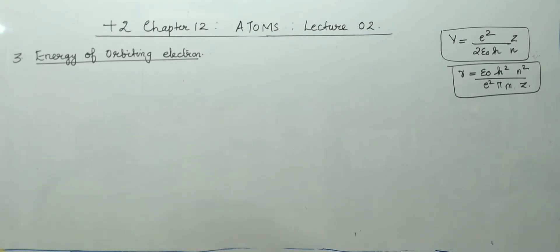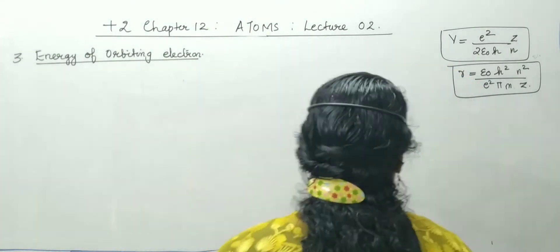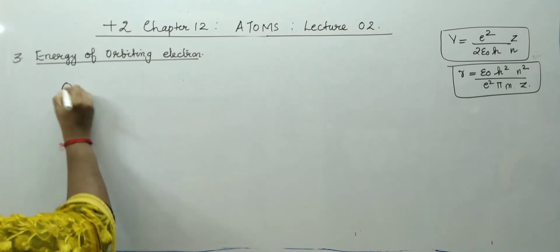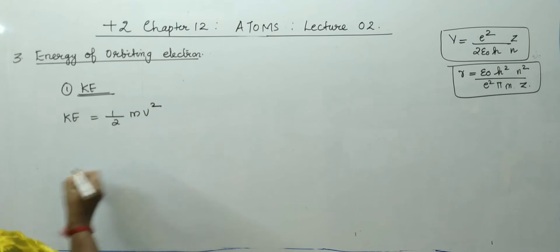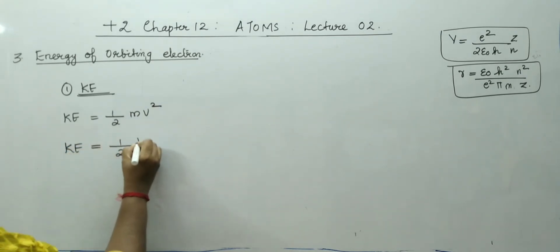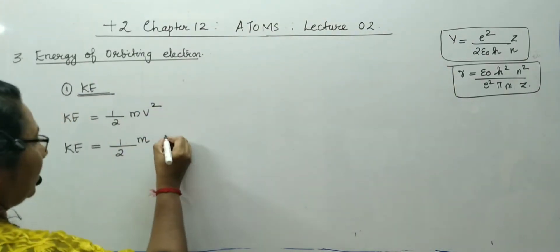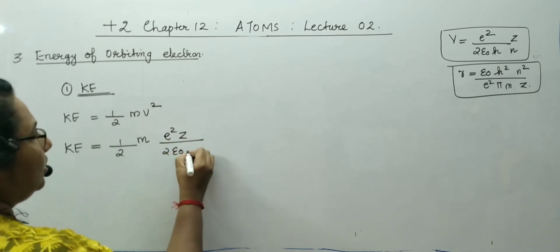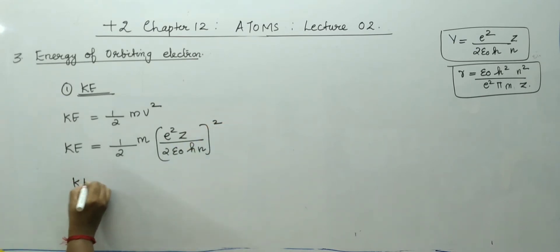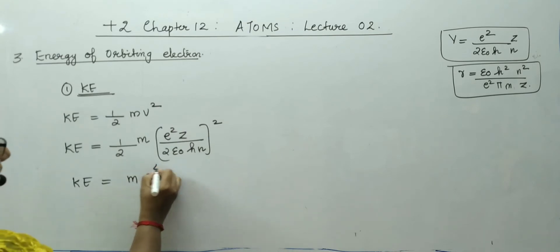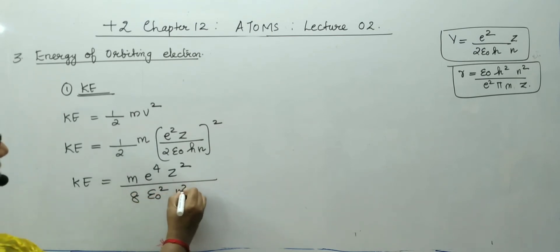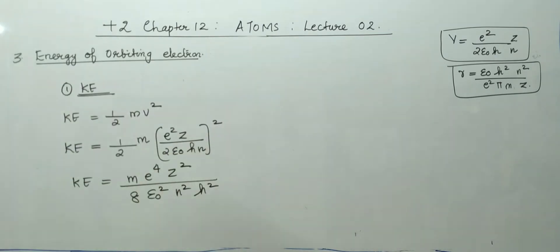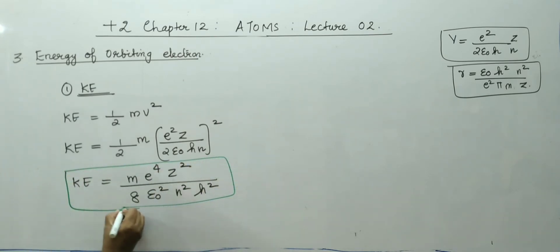Now we go to the energy of the orbiting electron. The first energy is kinetic energy. The equation for kinetic energy is ½mv². Kinetic energy = ½m × [Ze²/(2ε₀hn)]². The equation becomes: kinetic energy = me⁴z²/(8ε₀²n²h²).